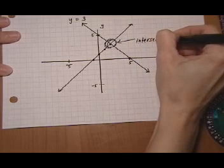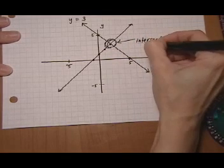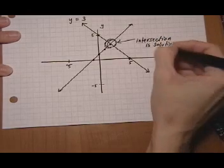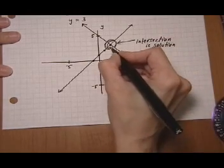The intersection point is the solution of the system. So the intersection is two, three.